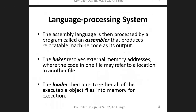If the machine is the target, the compiler converts through the assembler. The assembly language output goes through the assembler, which processes it to produce machine code. After the assembly, you have a linker and loader.